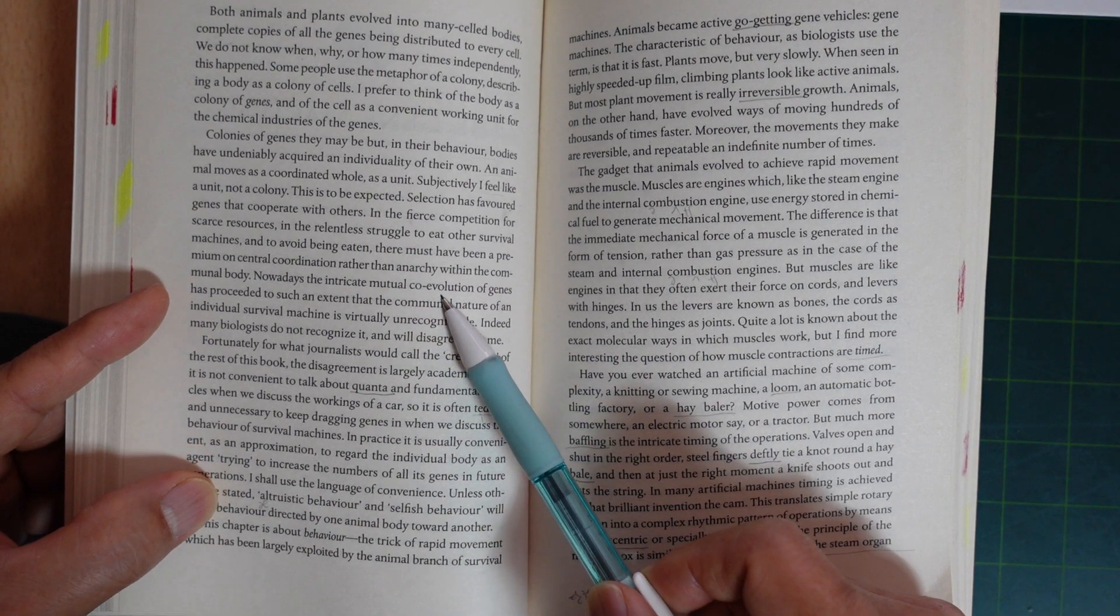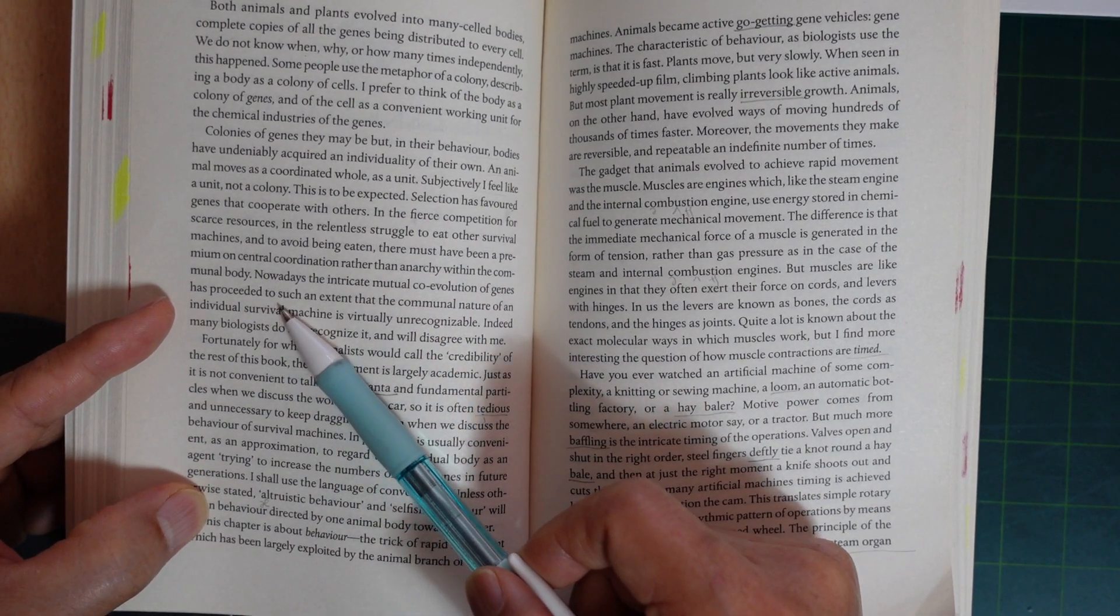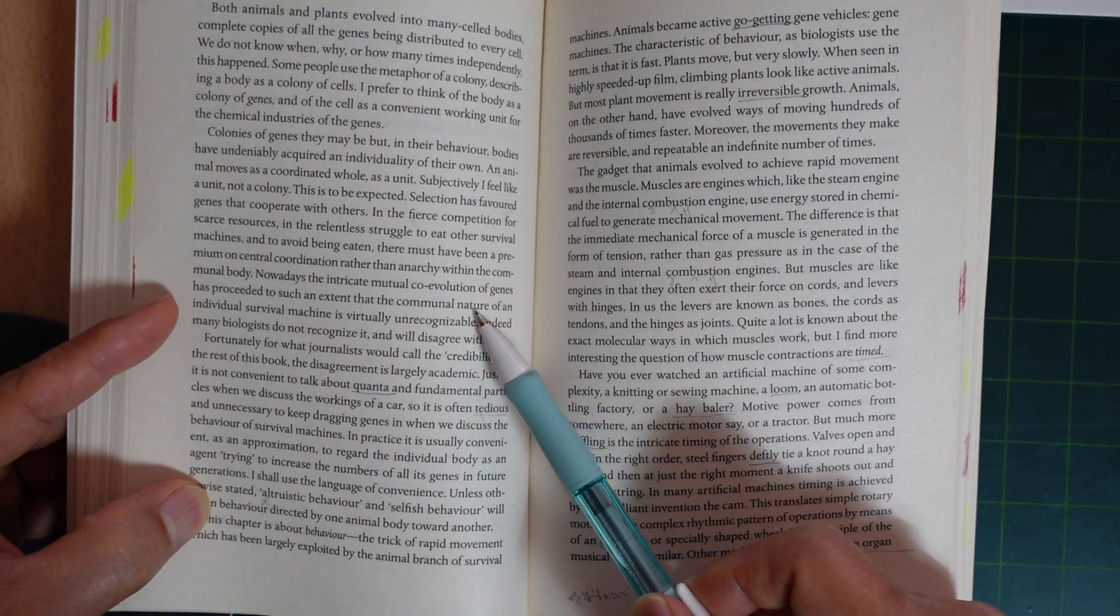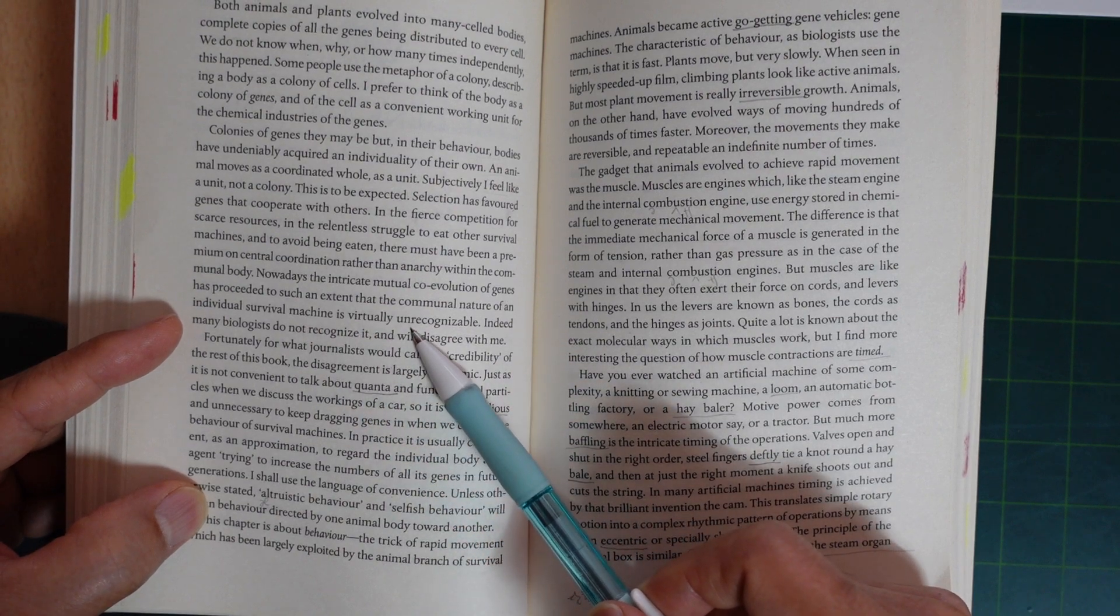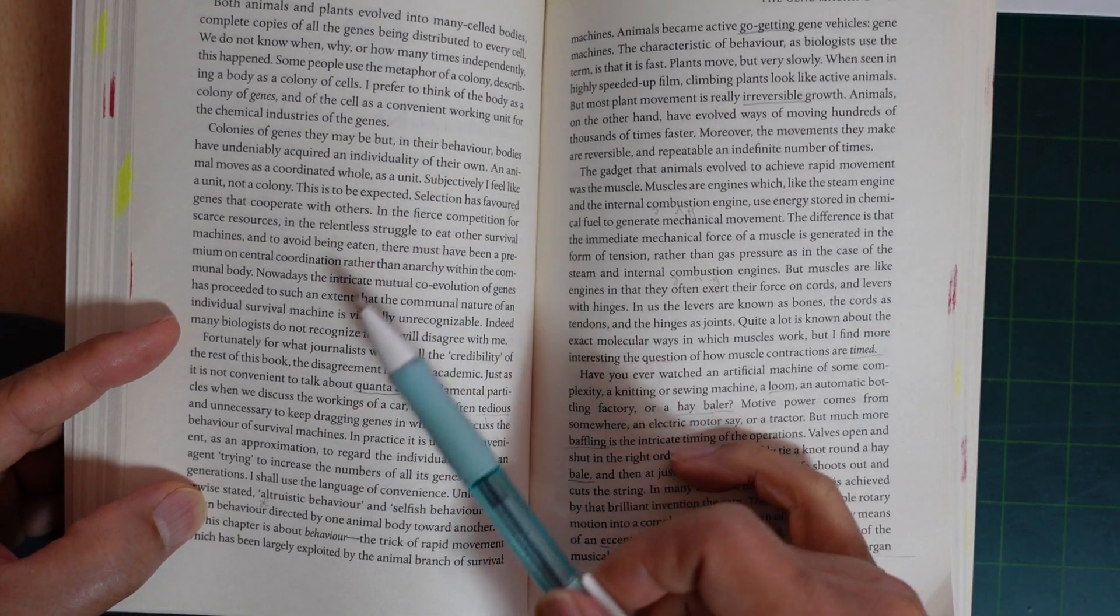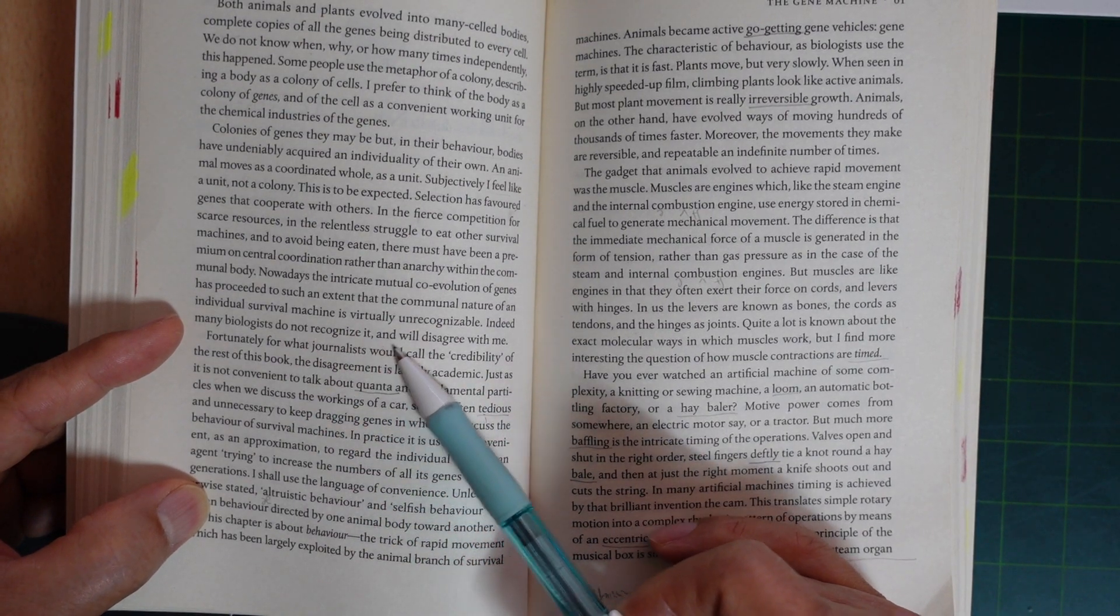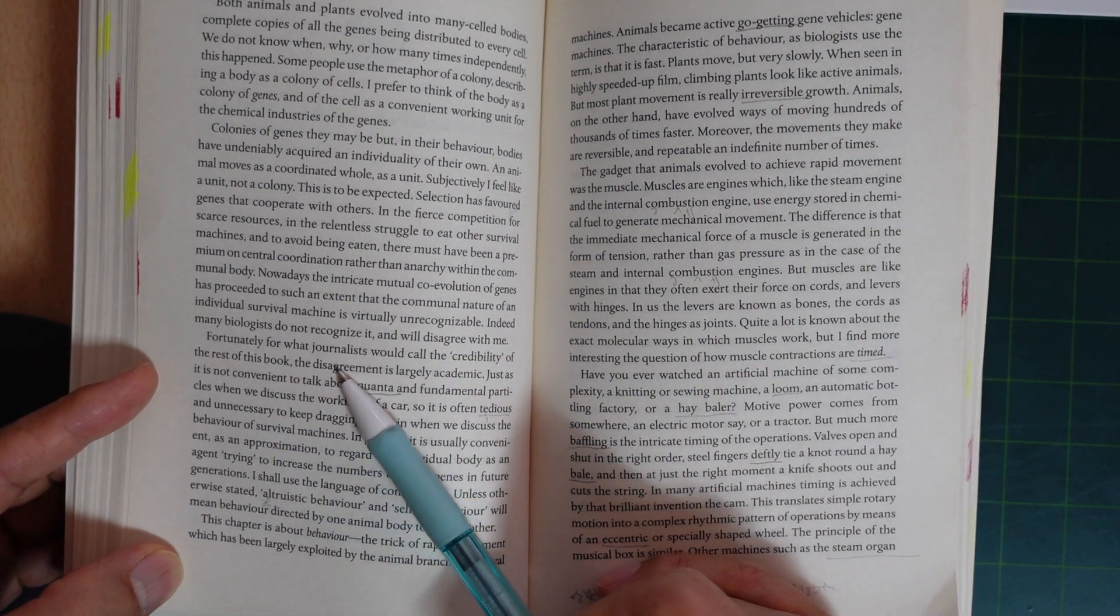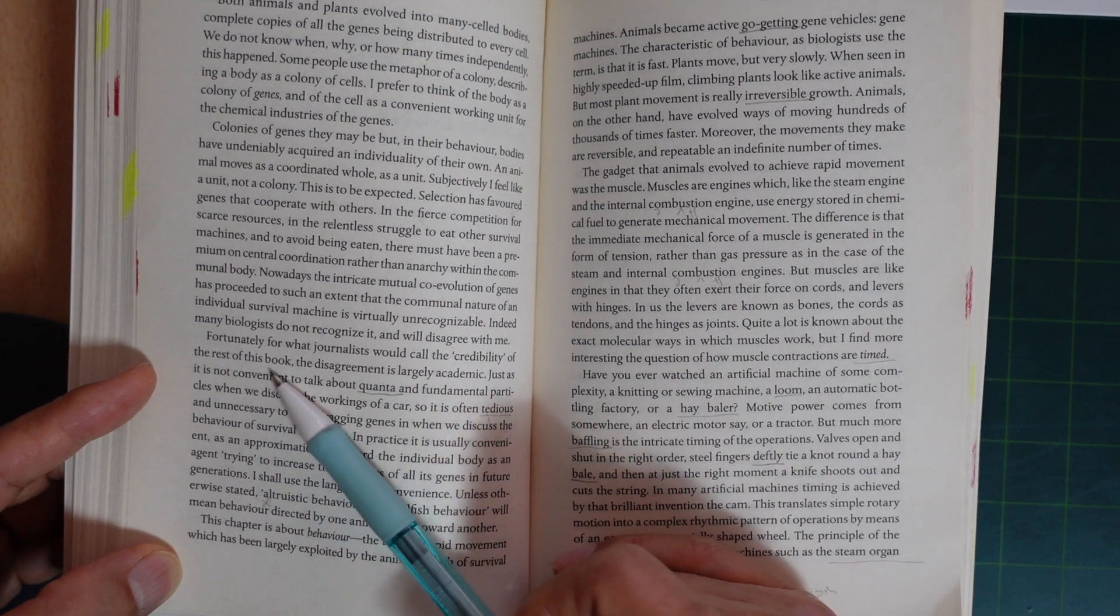Nowadays, the intricate mutual co-evolution of genes has proceeded to such an extent that the communal nature of an individual survival machine is virtually unrecognizable. Indeed, many biologists do not recognize it and will disagree with me. Fortunately, for what journalists would call the credibility of the rest of this book, the disagreement is largely academic.